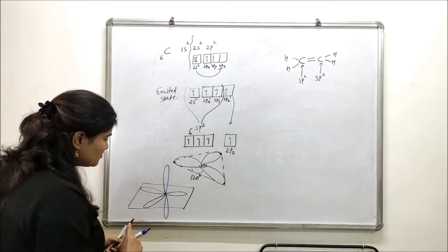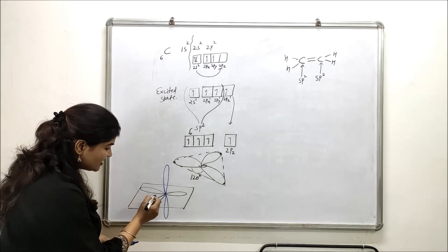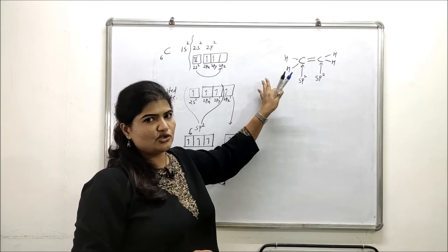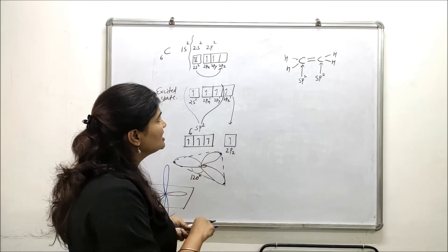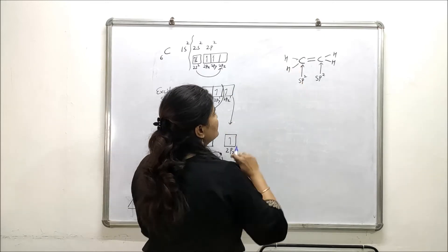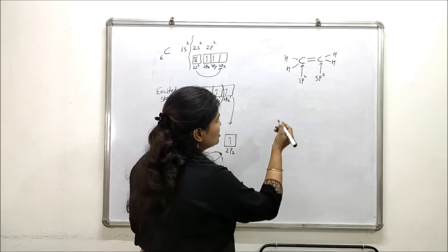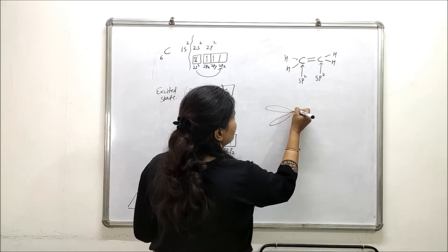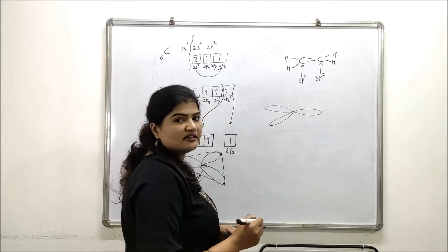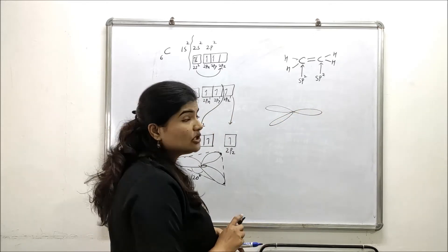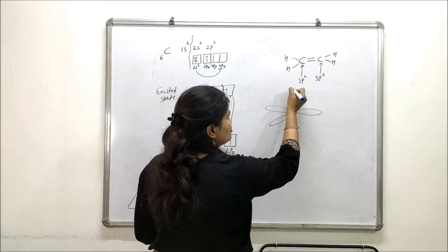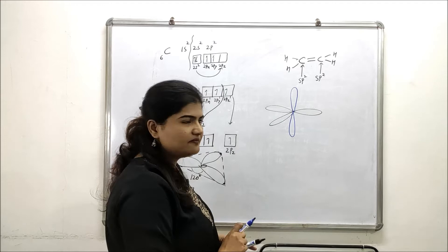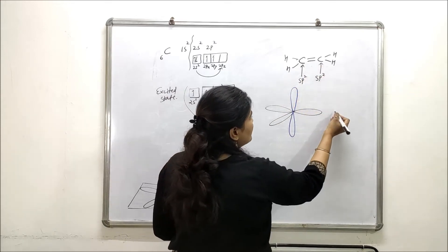Now using this information, let's draw the orbital picture for ethylene. So I will draw carbon in sp² like this: 1, 2 and 3. Bond angle is going to be 120. I will not forget the unhybridized 2pz orbital. This is my sp² hybrid, this is my sp² hybridized carbon. Now this carbon again, it will have 1, 2 and 3 sp² hybrid orbitals along with one unhybridized 2pz orbital.